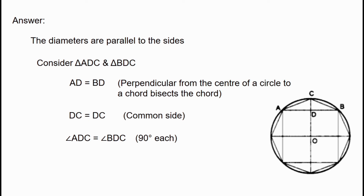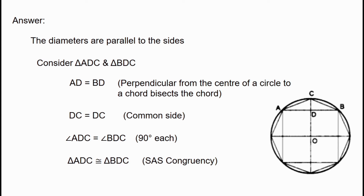The sides between the angle are 90 degrees, so this triangle is congruent — that is triangle ADC and triangle BDC — using SAS congruency. That is, two sides and one included angle of one triangle are equal to two sides and one included angle of another triangle, and those two triangles are said to be congruent.